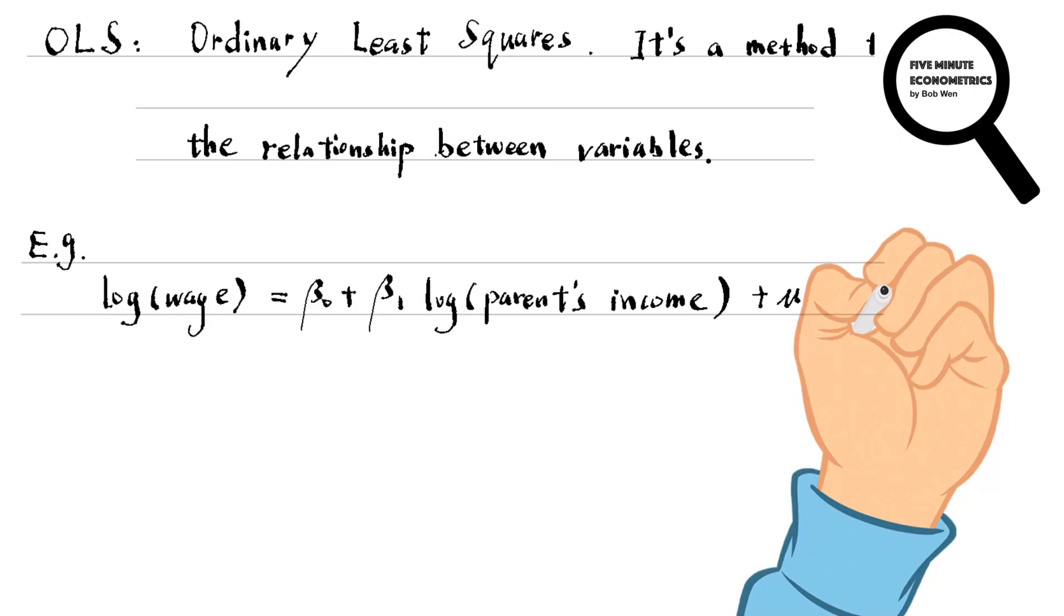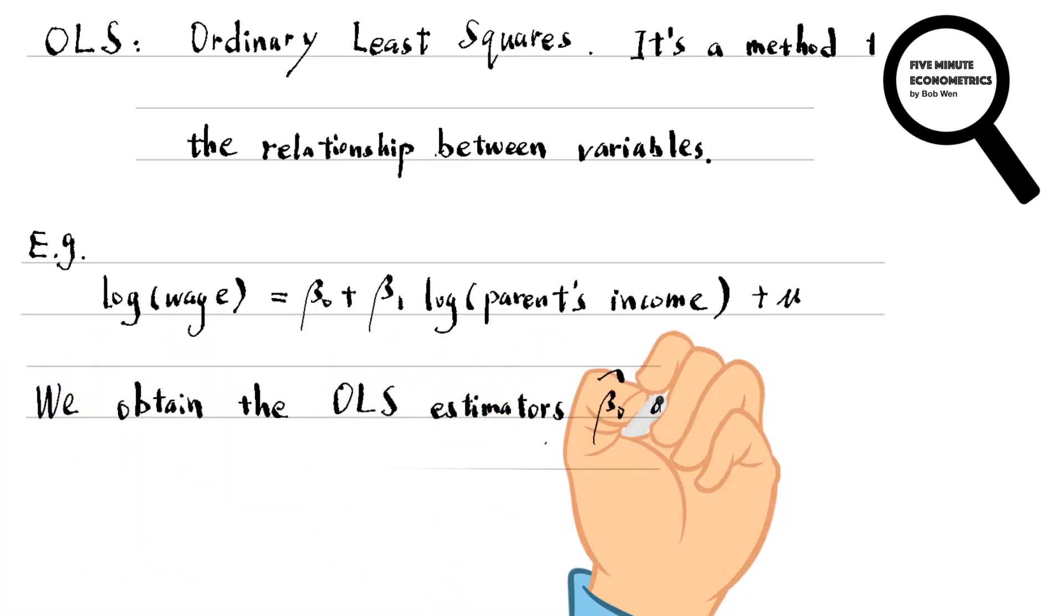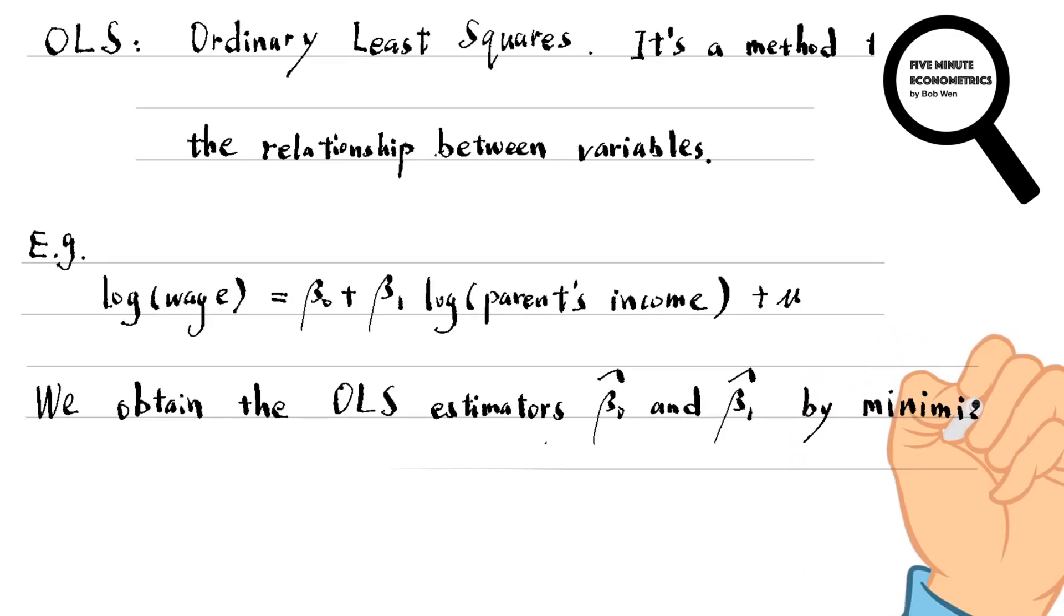If we assume a linear relationship between them, we can write a linear function and estimate the coefficient on the parent's income variable. The ordinary least squares, OLS, is the most commonly used method to estimate the coefficient. The idea behind this method is to minimize the sum of the squared residuals of the observations.